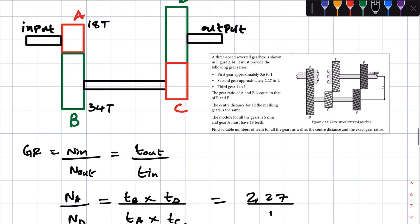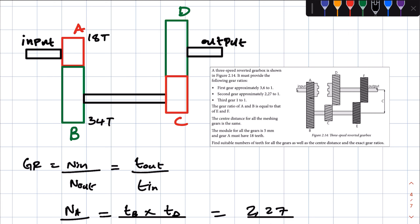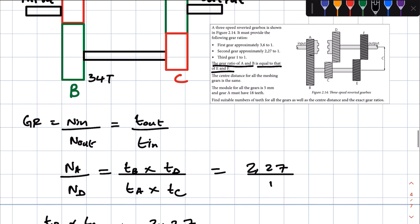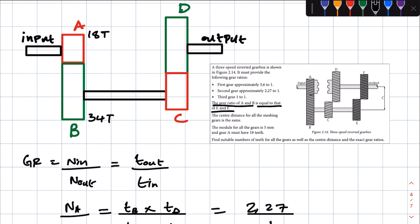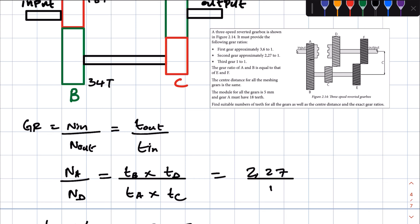Don't make the mistake of saying the gear ratio for A and B is equal to the gear ratio of C and D. Remember, they never told us that. We were able to use that relationship in first gear because they told us the gear ratio for A and B is equal to that of E and F. They didn't mention anything about the gear ratio of A and B being equal to that of C and D, hence we cannot assume that.